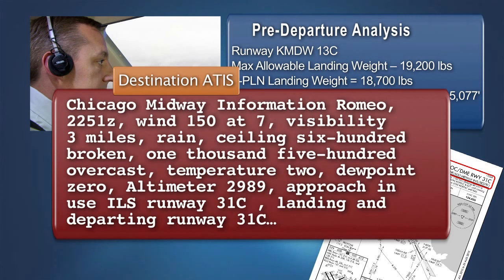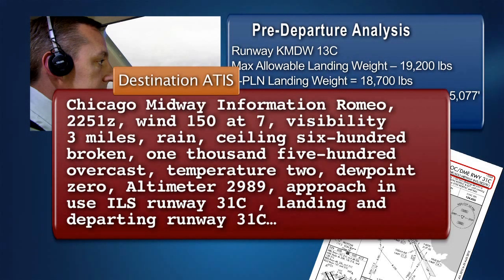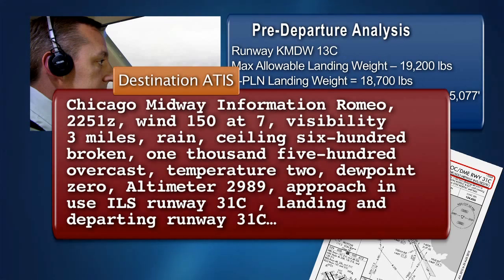Chicago Midway Information Romeo 2251 Zulu: Wind 150 at 7, visibility 3 miles, rain, ceiling 600 broken, 1,500 overcast, temperature 2, dew point 0, altimeter 29.89. Runway in use: ILS Runway 31 Center, landing and departing Runway 31 Center.